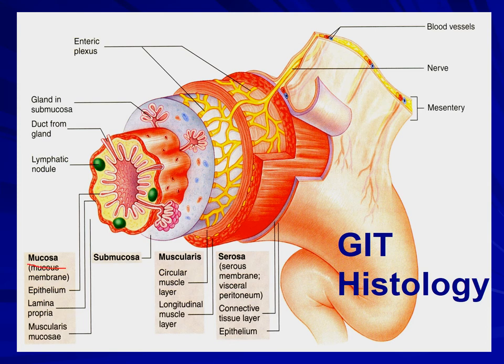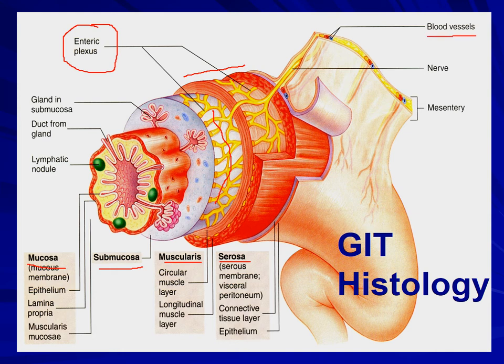The wall from inside to outward consists of: number one, the mucosa; then submucosa; muscularis layer; and the outermost one is serosa. Multiple nerves are gaining entrance into the GIT wall and they are forming a sort of plexus. Multiple blood vessels are also gaining entrance in the wall of GIT. A duct can also be observed gaining entrance from a gland into the lumen of GIT.